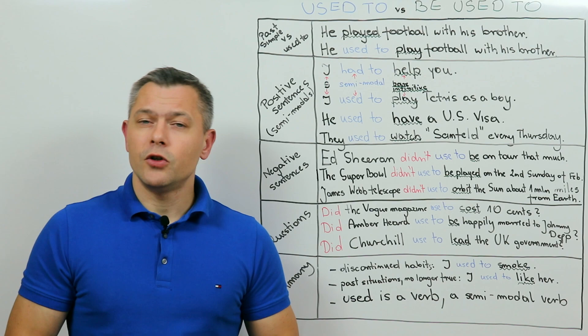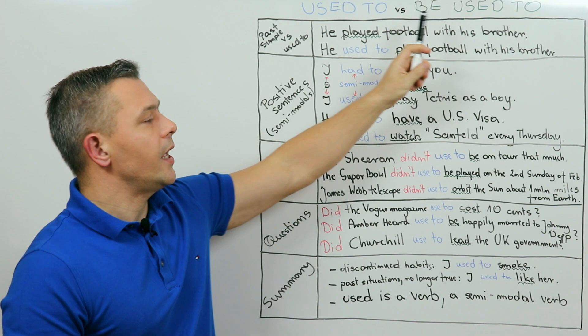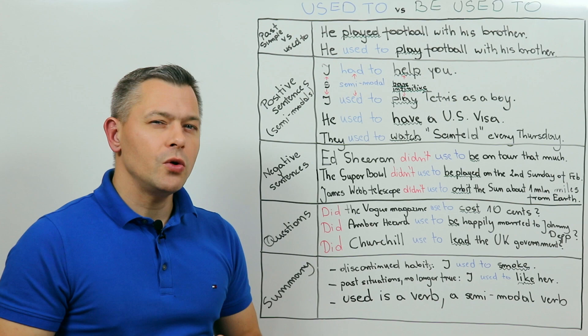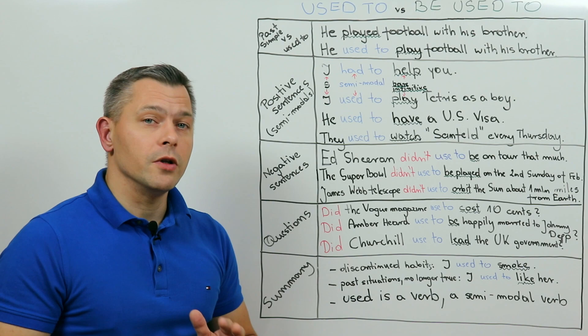Today the chef is serving a two-course meal consisting of two structures: used to and be used to. They look and sound similar, don't they? They do. But used to and be used to are two entirely different structures, with two entirely different building blocks and usage.